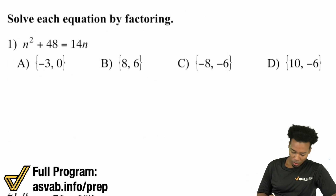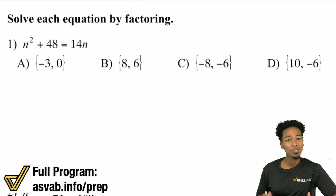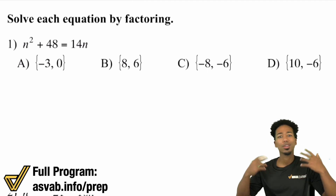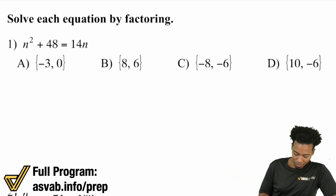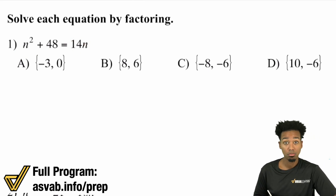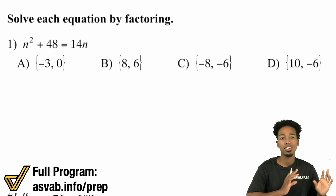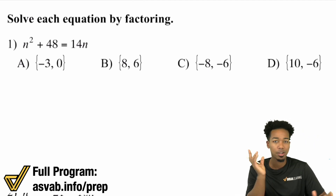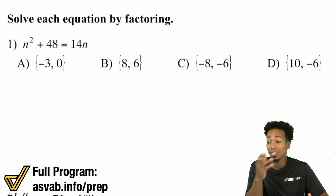Remember what I showed you last video and the one before that? We need a zero by itself before we can go ahead and factor — before we can do all this. So notice over here: is there a zero already by itself on the left or the right side? No, there isn't. All we need to do is move everything to one side, get a zero by itself on the right side or left side — whatever side you want — but just get zero by itself. Then you can factor, then you can apply the zero product property, and then you're good.